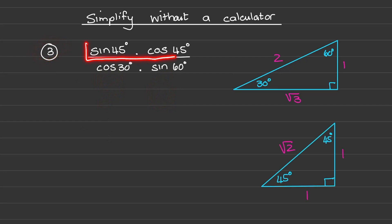We have sine of 45 times cos of 45 divided by cos of 30 times the sine of 60. Now we need both special triangles. So I draw them from memory and I find all of these ratios.